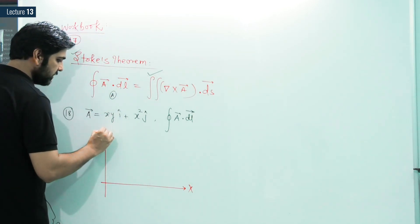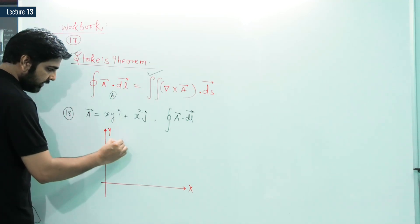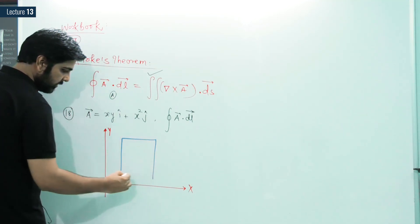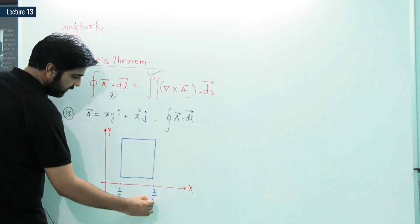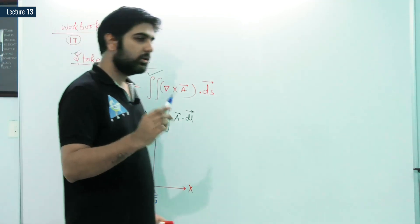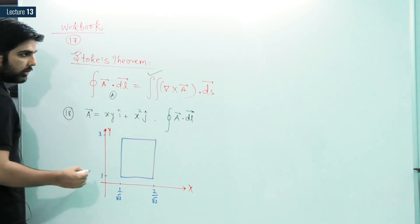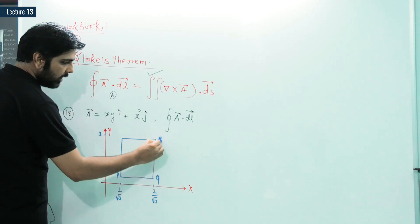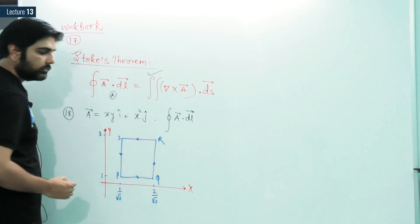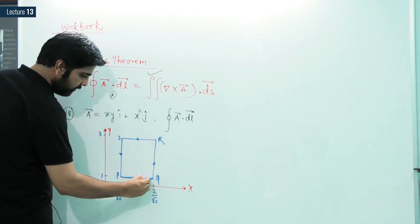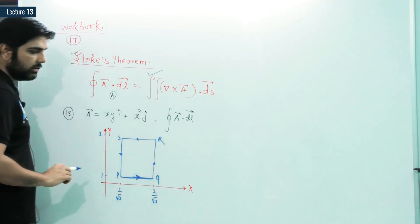The path has coordinates: x values 1/√3 and 2/√3, and y values 1 and 3. This forms a closed path PQRS. For the line integral, we would need to go from P to Q, Q to R, R to S, and S back to P.